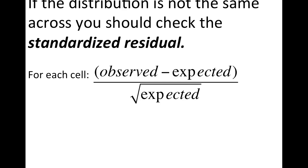If we go through this with our last example, we have our observed values and our expected values. This does take a little bit of time — most likely on a test, I wouldn't give you one that had nine cells to do. But right now it's good practice to get the calculation down. If you can think of some shortcuts in your calculator, you can use lists: put all your values into two lists and use L1 minus L2 divided by the square root of L2, or just do the formula for each cell individually.